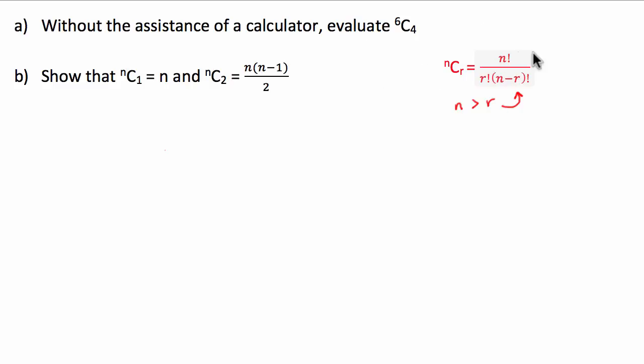So what we're going to do first for this part a, is I'm just going to plug in the values of n and r into this formula and that's going to help us solve 6 choose 4. So we have 6 choose 4 is equal to 6 factorial divided by r factorial which is 4 factorial bracket 6 take 4 factorial.